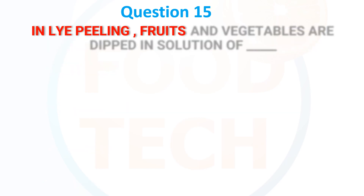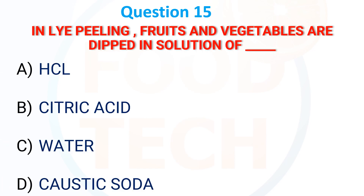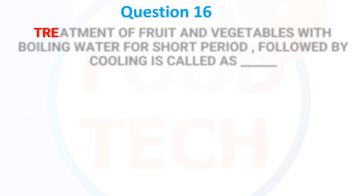In lye peeling, fruits and vegetables are dipped in a solution of: A) HCl, B) Citric Acid, C) Water, D) Caustic Soda. The answer is D) Caustic Soda.